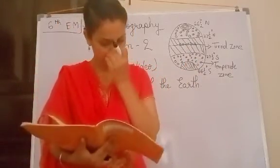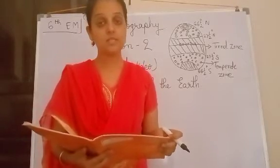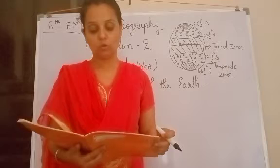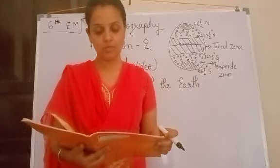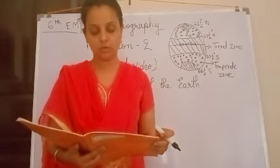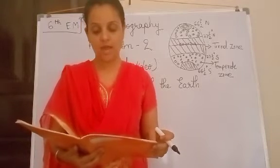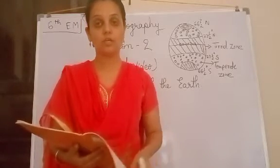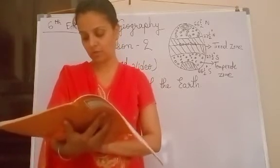This only we are going to study today. On page number 12: The midday sun is exactly overhead at least once a year on all latitudes in between the Tropic of Cancer and the Tropic of Capricorn. This area therefore receives the maximum heat and is called torrid zone.